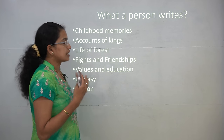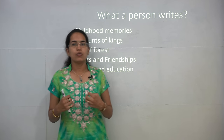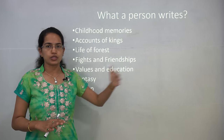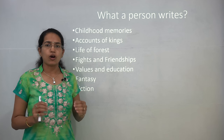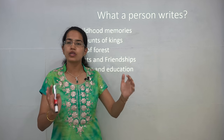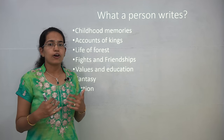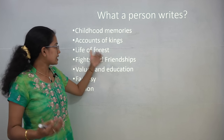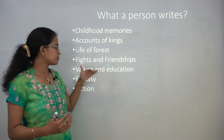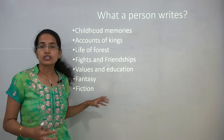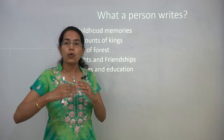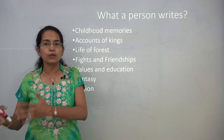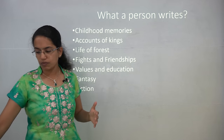Now what a person writes — if given something to write, what comes to my mind might be different from what another person writes. If I have to write a 2000-word essay on a topic of my choice, I can write on my childhood memories; another person can write on the account of kings; one can write on the life of the forest, the fights and friendships, values and education, fantasies, or fiction. So these show the diversity in writing, and these diversities have led to different thought models that evolved over time and laid the foundation for political science.